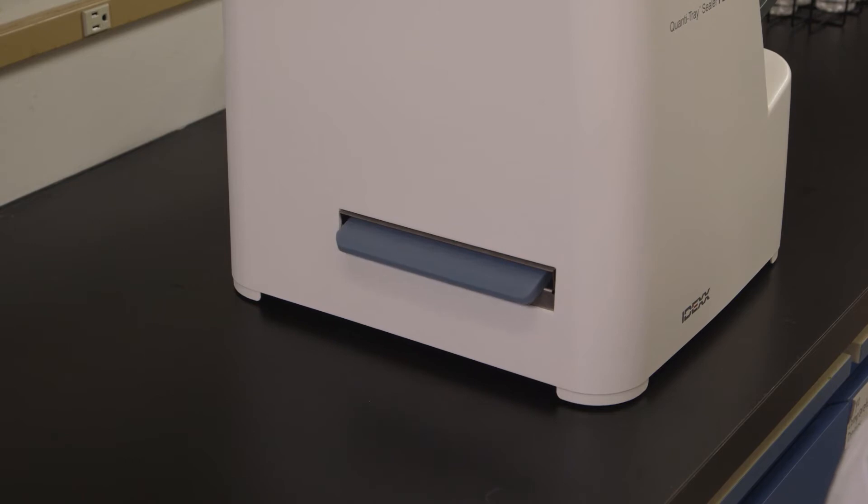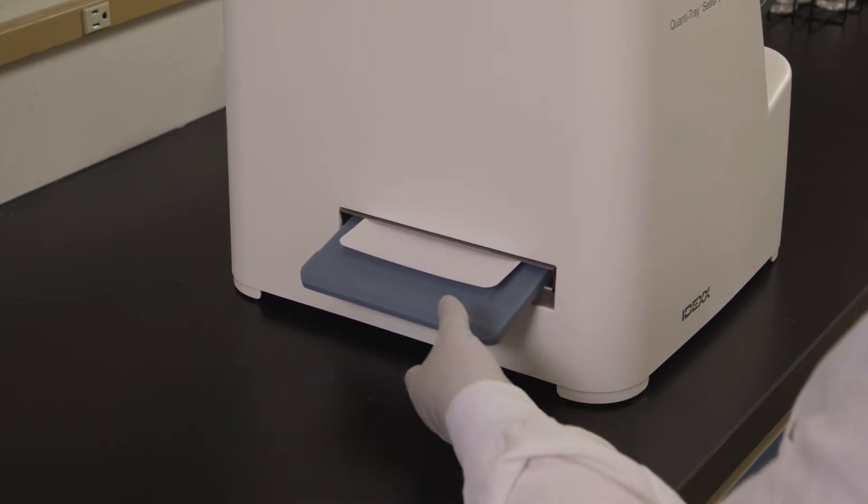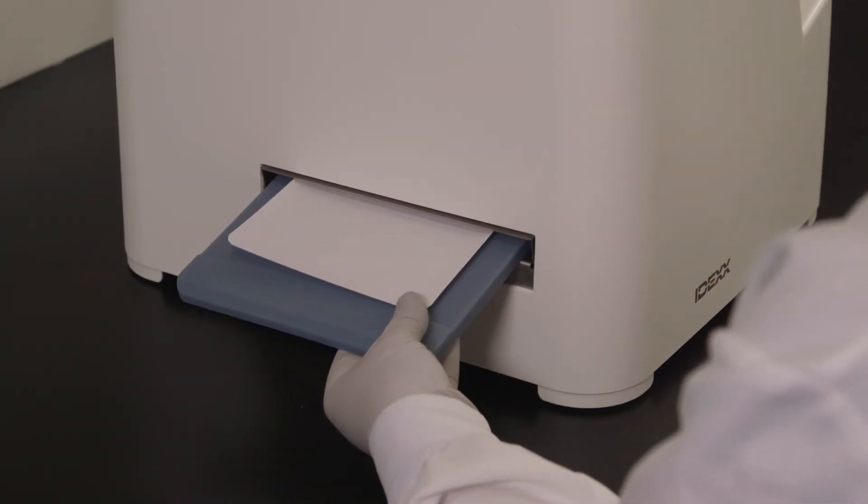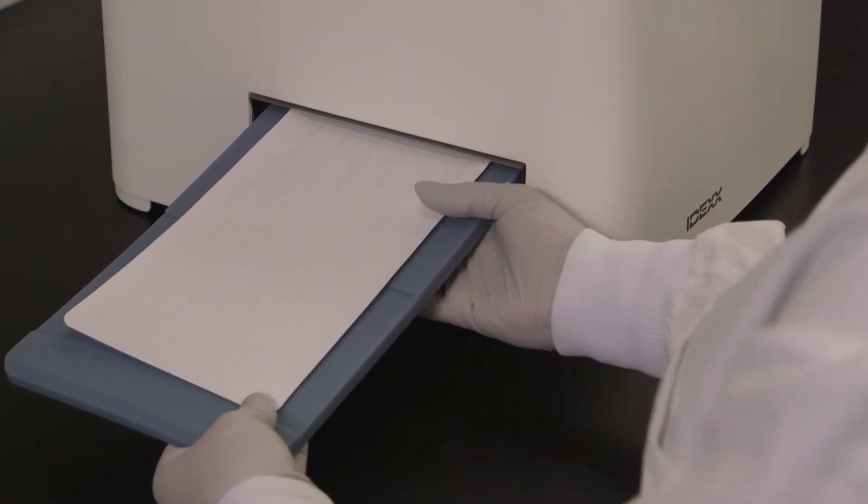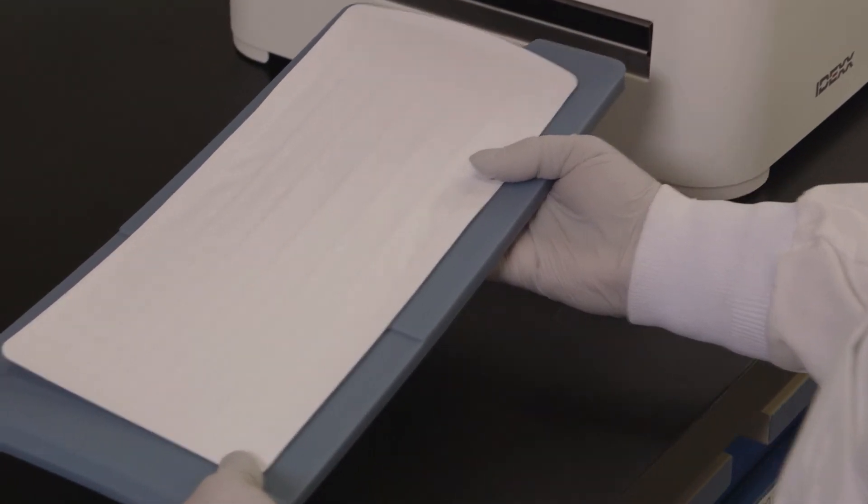The sealer distributes the sample mixture into the Quantitray LEG-ALERT wells, seals the wells, and partially ejects the sealed tray. Remove the rubber insert and tray from the sealer.